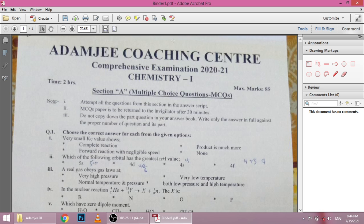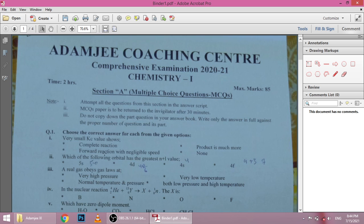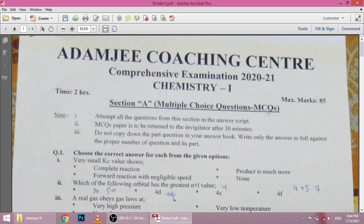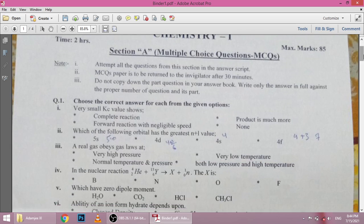The first MCQ is that very small K_c value shows forward reaction with negligible speed. So a very small value of K_c means that we know the forward reaction is very slow in speed.